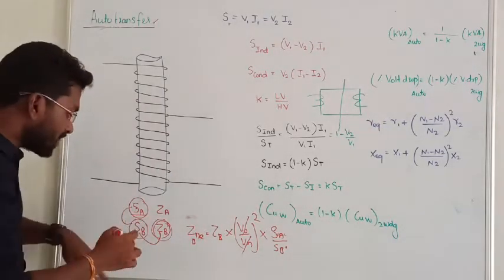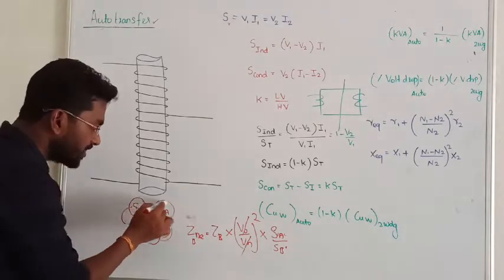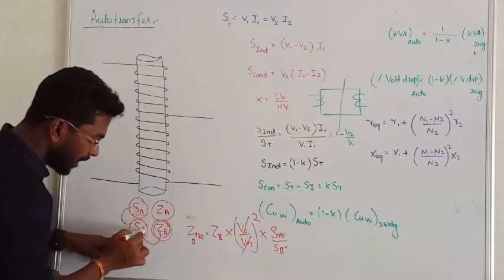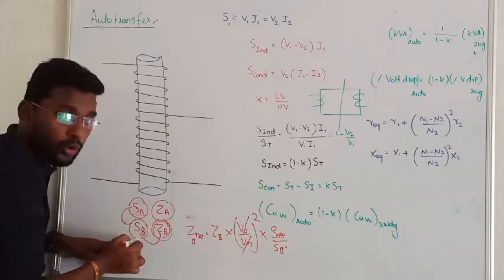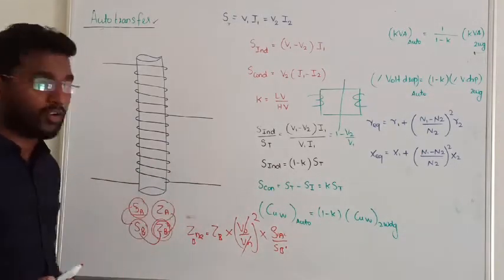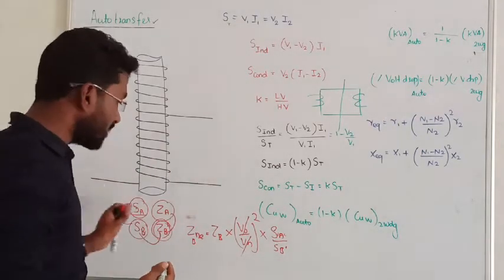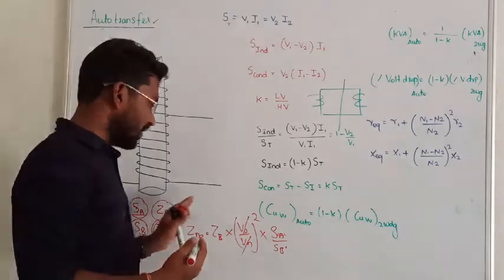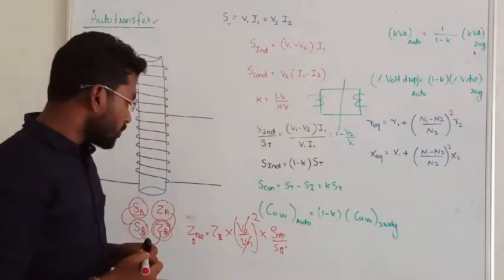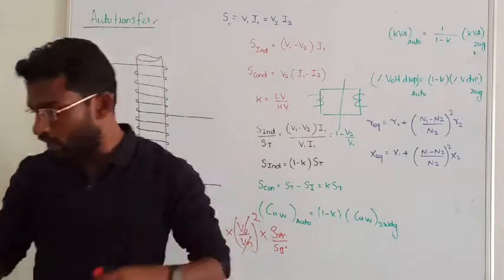This is how we transfer impedance from one rating to another. Suppose you choose ZB based on the kVA values of transformer A — you convert the impedance to the new kVA values corresponding to transformer B, and then you can perform the parallel operation. These are all the things we covered up to now.